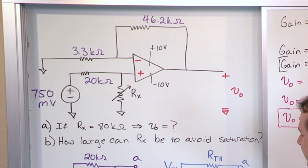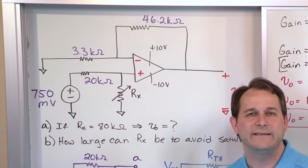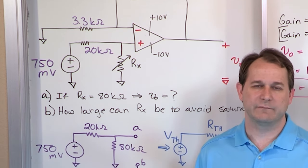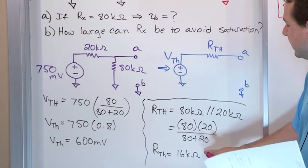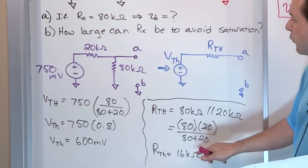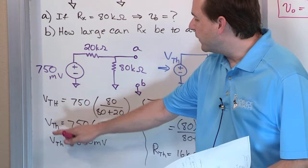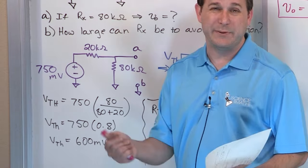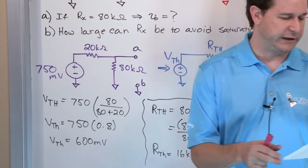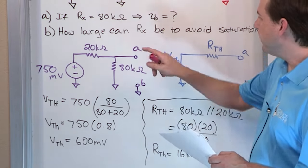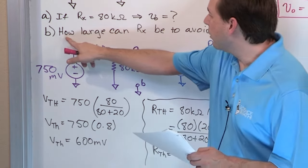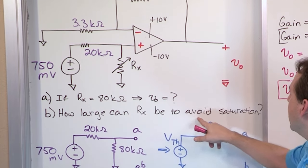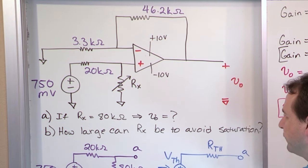Notice we didn't even need the Thevenin resistance. I showed you how to calculate it for practice, but all you really needed was the Thevenin voltage. So if you're in a pinch, that's really all you need. Now that's for Part A. Part B: how large can R_X be to avoid saturation?